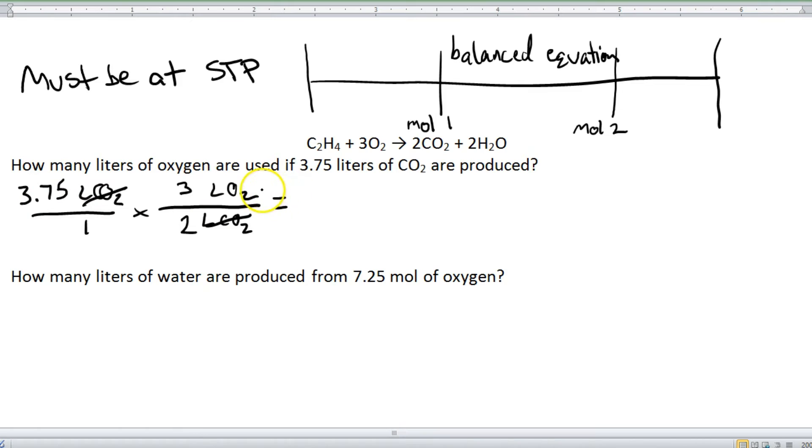So we're going to do 3.75 times 3 divided by 2. And when you type that all out in your calculator, what you end up with is 5.625. And now, our original number over here is 3.75, which has three significant figures. So that means we can only have three sig figs in our answer. So we're going to count 1, 2, 3. The next number is a 5, which means we round up. So we end up with 5.63, and the unit left over is liters of oxygen. Now, remember, you can only do that one-step process if it's a liters-to-liters conversion.